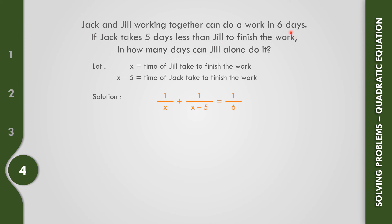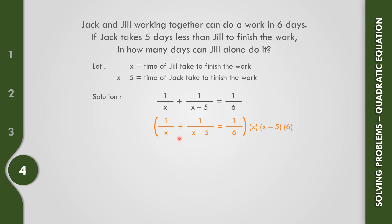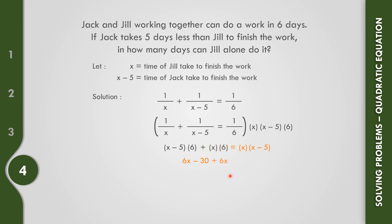Multiplying both sides by X, (X minus 5), and 6: the first term gives (X minus 5) times 6, the second term gives X times 6, and the right side gives X times (X minus 5). Expanding: 6X minus 30 plus 6X equals X squared minus 5X.